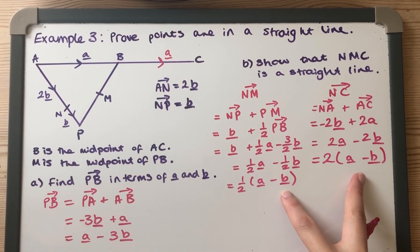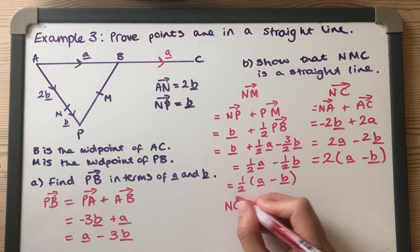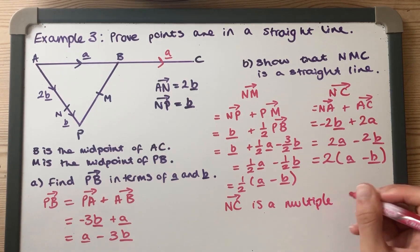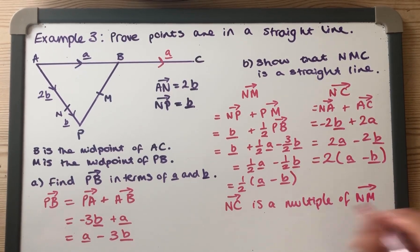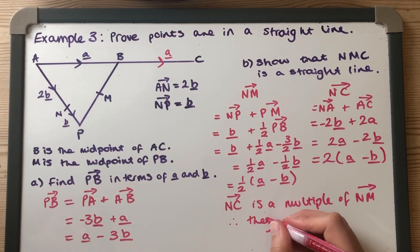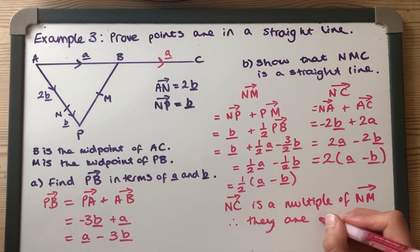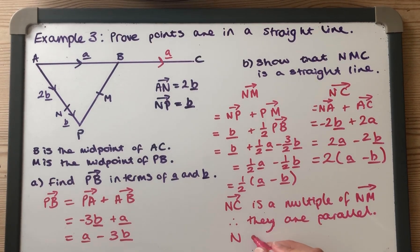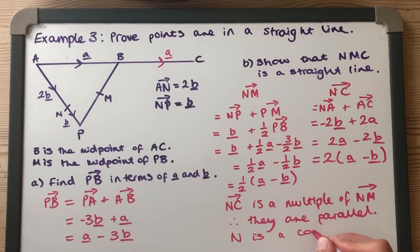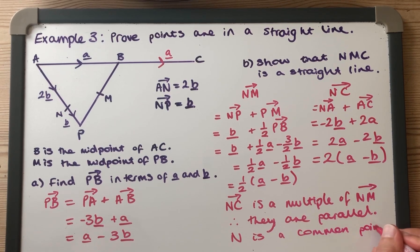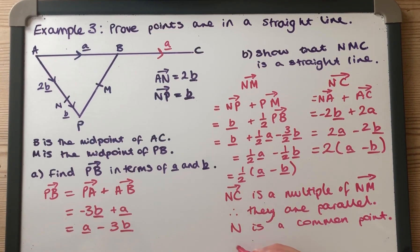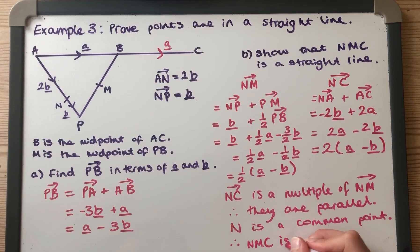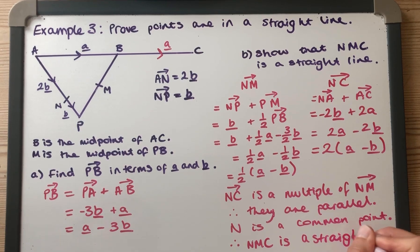And again we can clearly see that those two are multiples of each other. So N to C is a multiple of NM, therefore they are parallel, and then we've got N is a common point. So I'm going to have to move my hand down a bit. Therefore NMC is a straight line.